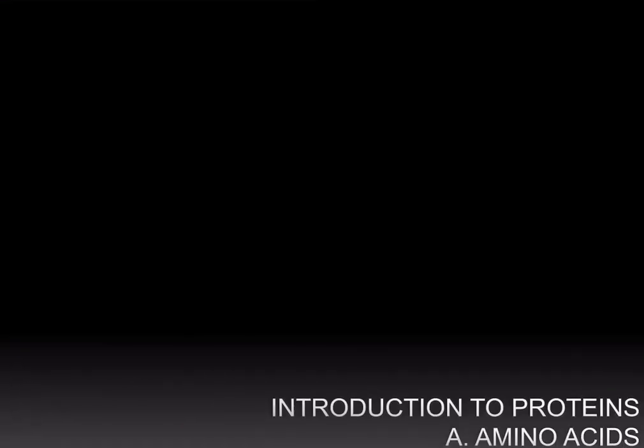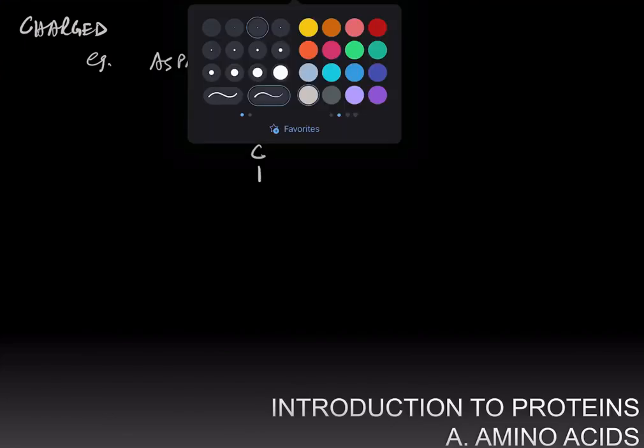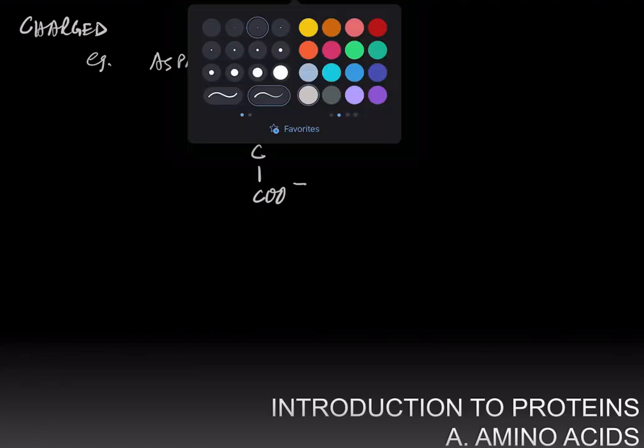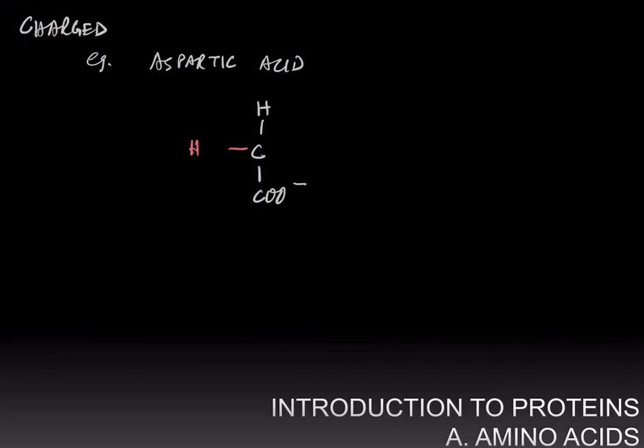Amino acids can be classified into three basic categories. You could have charged amino acids. For example, aspartic acid, in which the side chain is charged. And then, of course, you have the amino group and the carboxyl group.